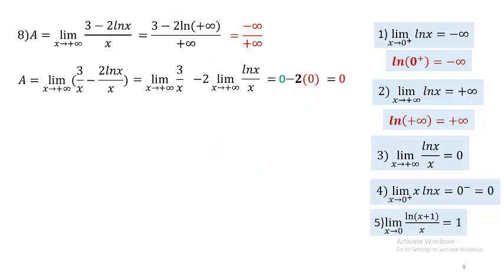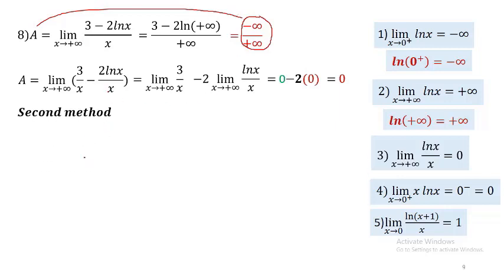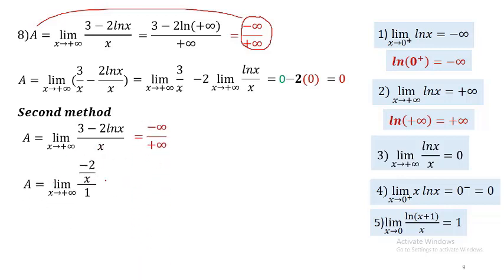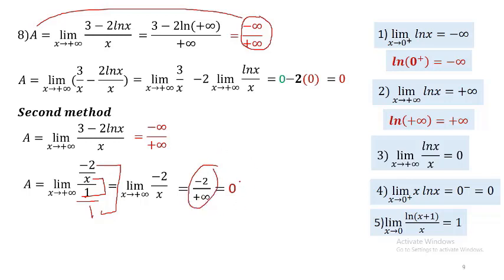Second way to solve application 7: since we have −∞ over +∞ form after manipulation, apply L'Hôpital's rule. Derivative of ln x is 1/x; with the −2 coefficient we get −2/x. Derivative of 3 is 0, and derivative of x is 1. So the limit equals (−2/x)/1 = −2/x. Substituting x = +∞: −2/∞ = 0. Both methods confirm the limit equals 0.